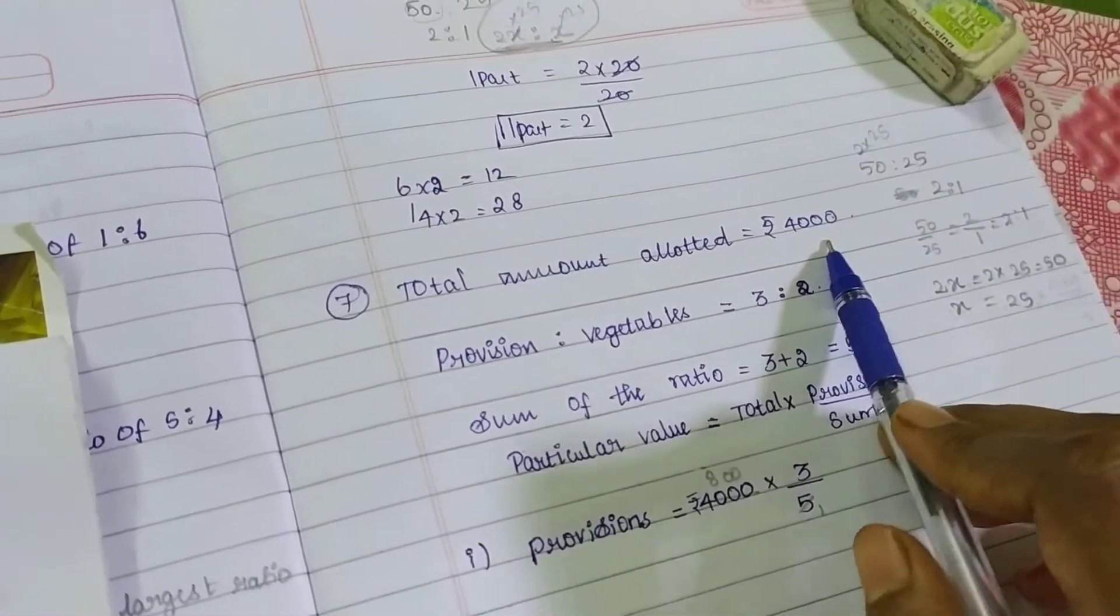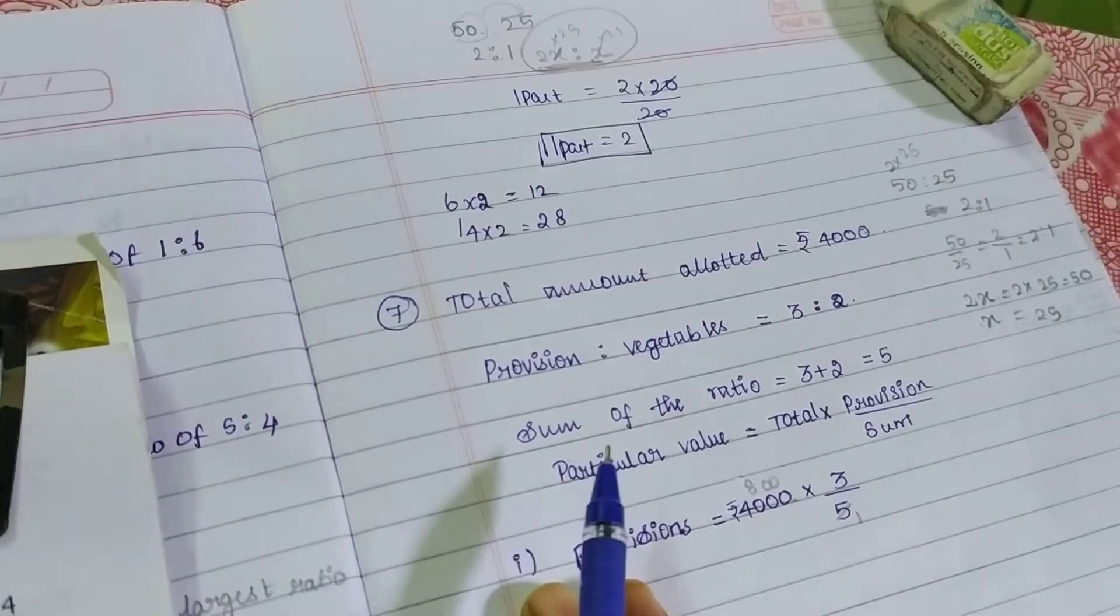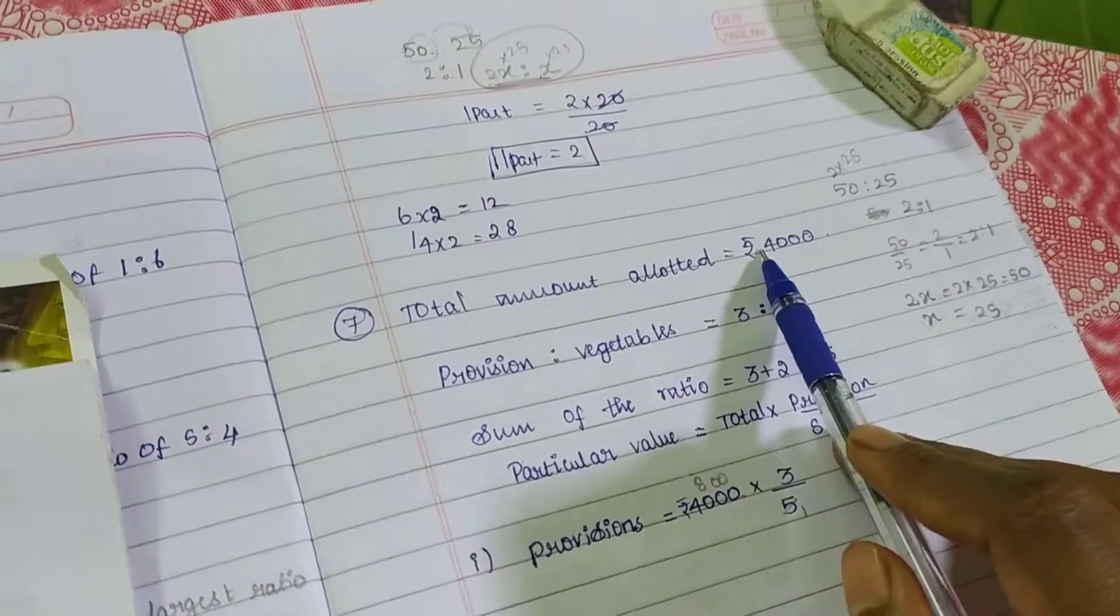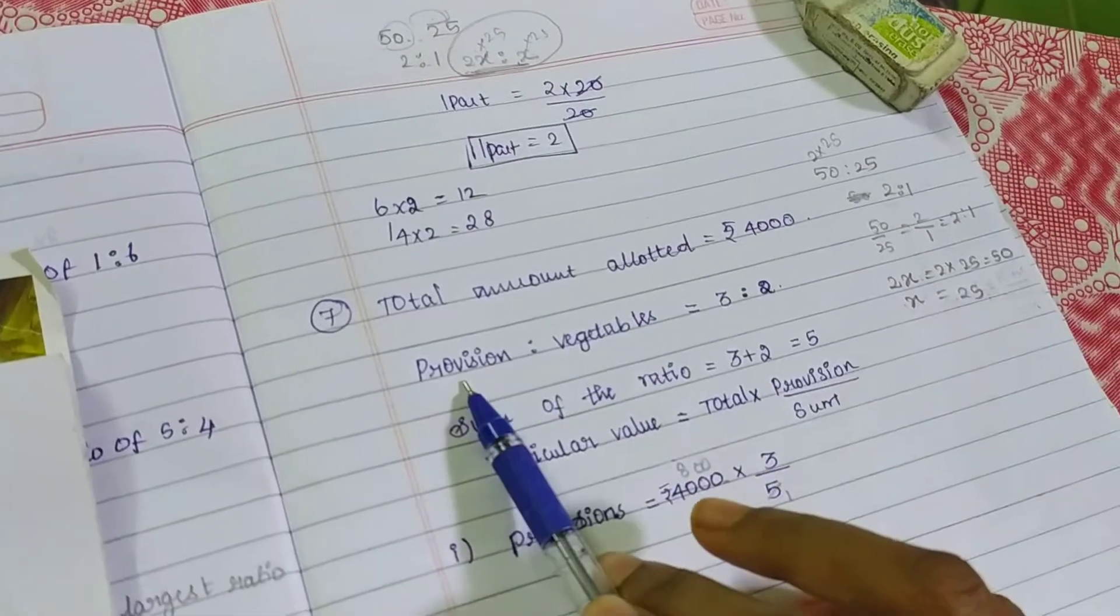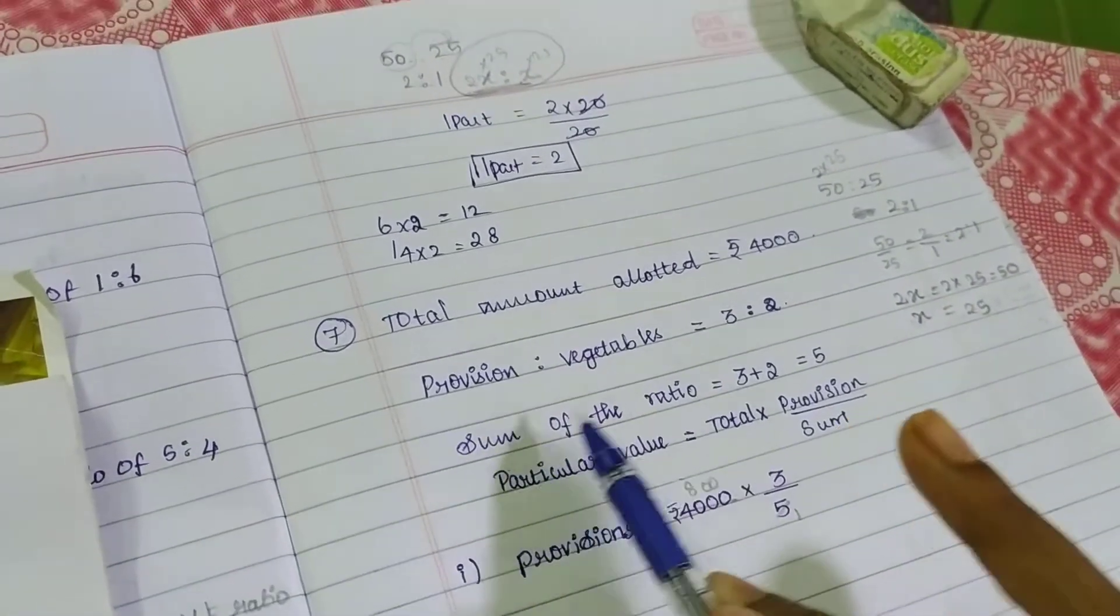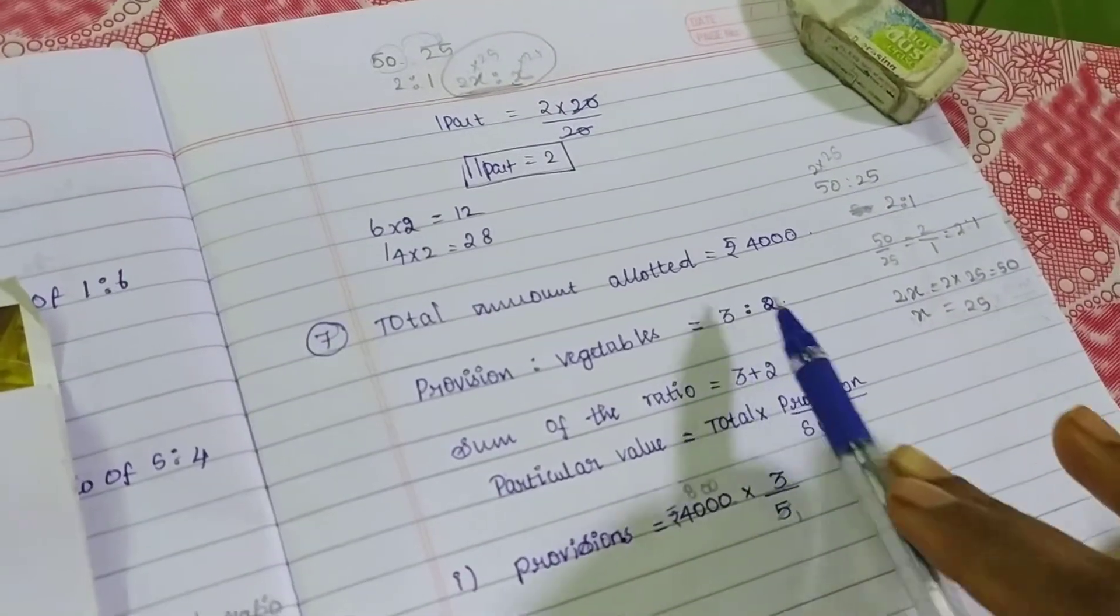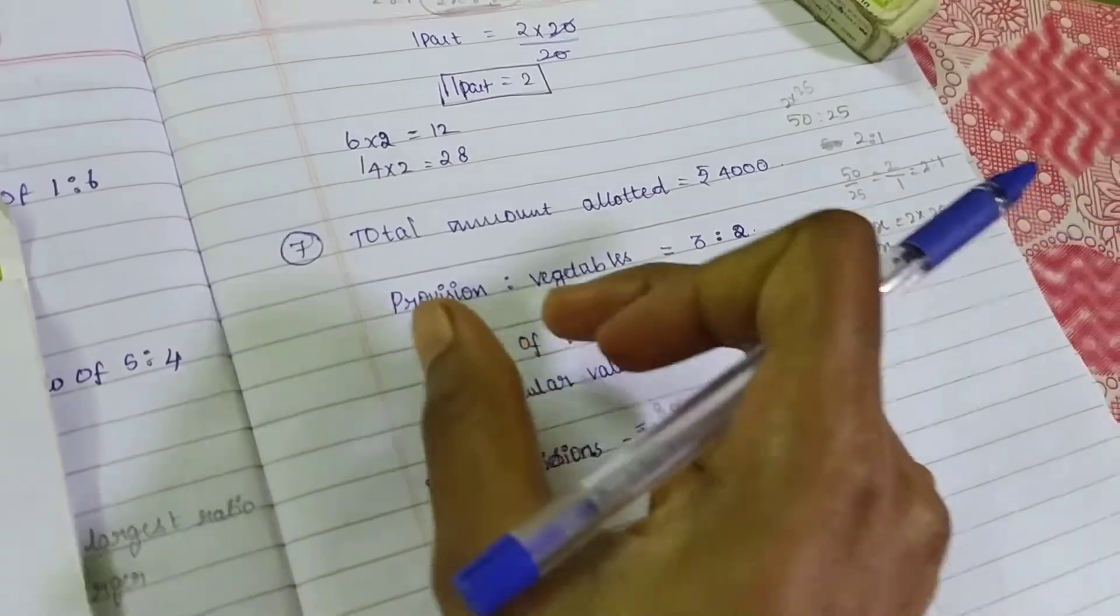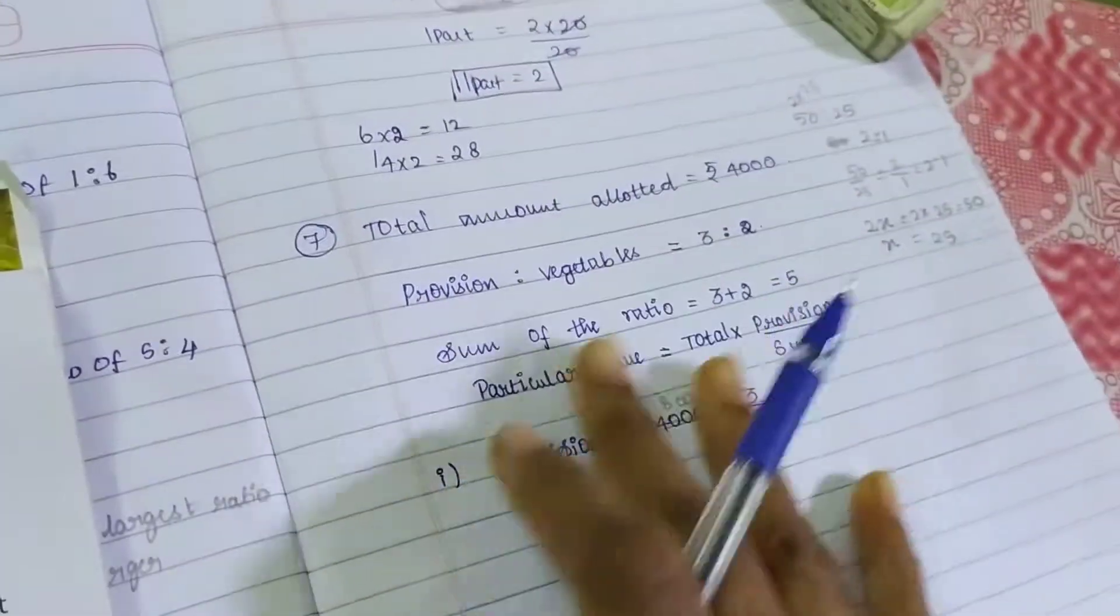So total amount is 4000 rupees. You are totally having 4000 rupees. So 3 times, in 4000, 3 parts is for your provision, 2 parts is your vegetables. We are having one formula: sum of the ratios. We already have sum of the ratios, the addition of this. So particular value means you are going to find out particularly provision value alone.